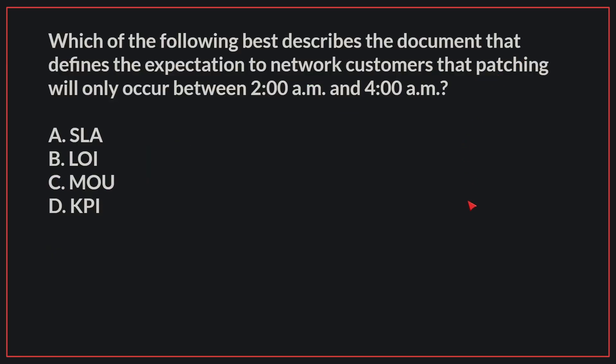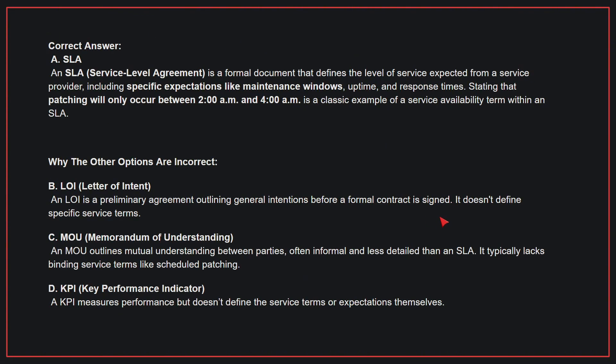Which of the following best describes the document that defines the expectation to network customers that patching will only occur between 2am and 4am? The correct answer is A: SLA. An SLA is a formal document that defines the level of service expected from a service provider, including specific expectations like maintenance windows, uptime, and response times. Stating that patching will only occur between 2am and 4am is a classic example of a service availability term within an SLA.